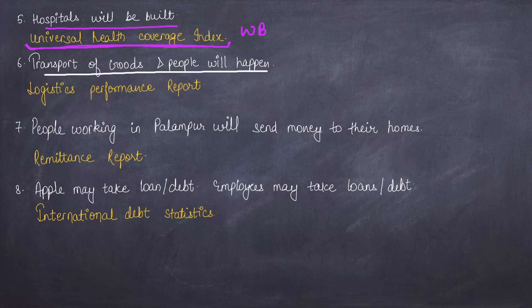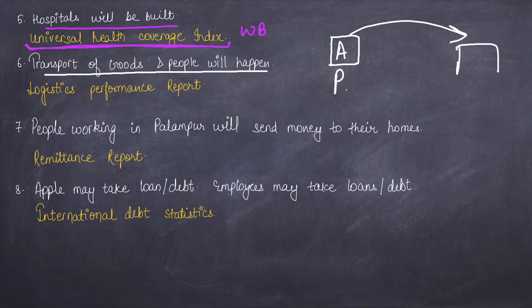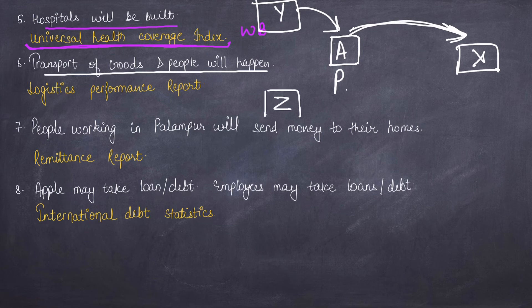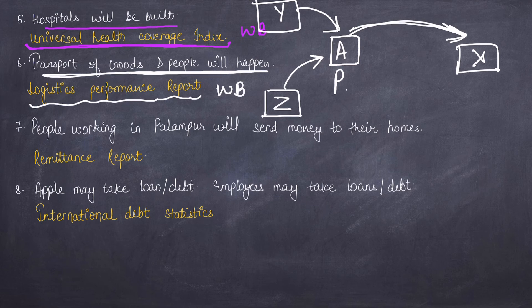Transport of goods and people will happen. Palampur has Apple's plant, with a market at location X, inputs coming from location Y, and people migrating from location Z for jobs. So transport of goods and people is happening, and therefore the Logistics Performance Report is also published by the World Bank. Logistics means movement — yatayat.